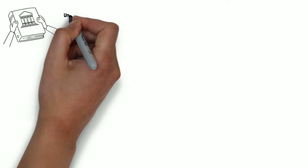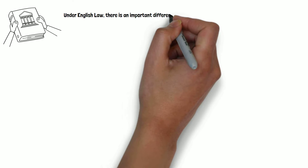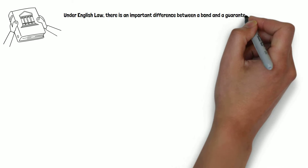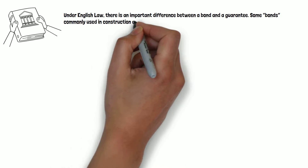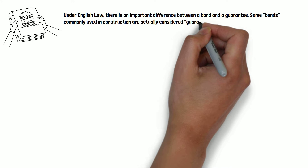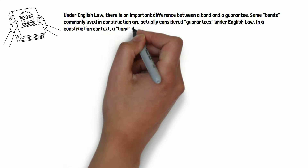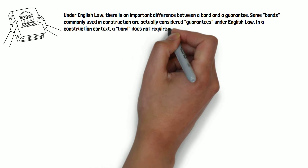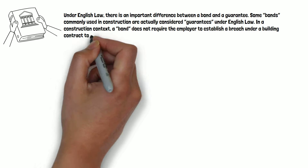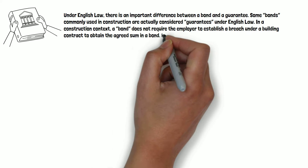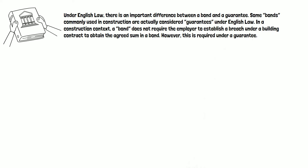It should be noted that under English law there is an important difference between a bond and a guarantee. Some bonds commonly used in construction are actually considered guarantees under English law. In a construction context, a bond does not require the employer to establish a breach under a building contract to obtain an agreed sum, however this is required under a guarantee.